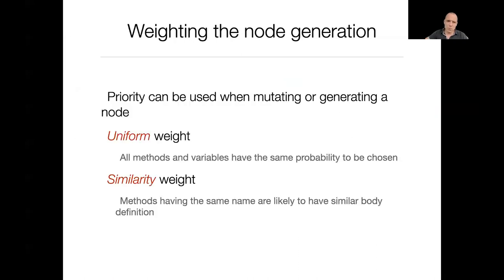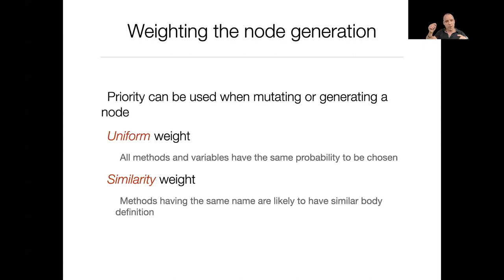We have two weighting mechanisms. The priority of elements can be employed whenever we do a mutation or generation of a node. The first is uniform, meaning all methods and variables have equal priority to be chosen. The second is the similarity weight: when trying to fill the body of a method, we look for other methods in the system with the same name and use their body to weight the probability. The intuition is that two methods with the same name likely have similar bodies.